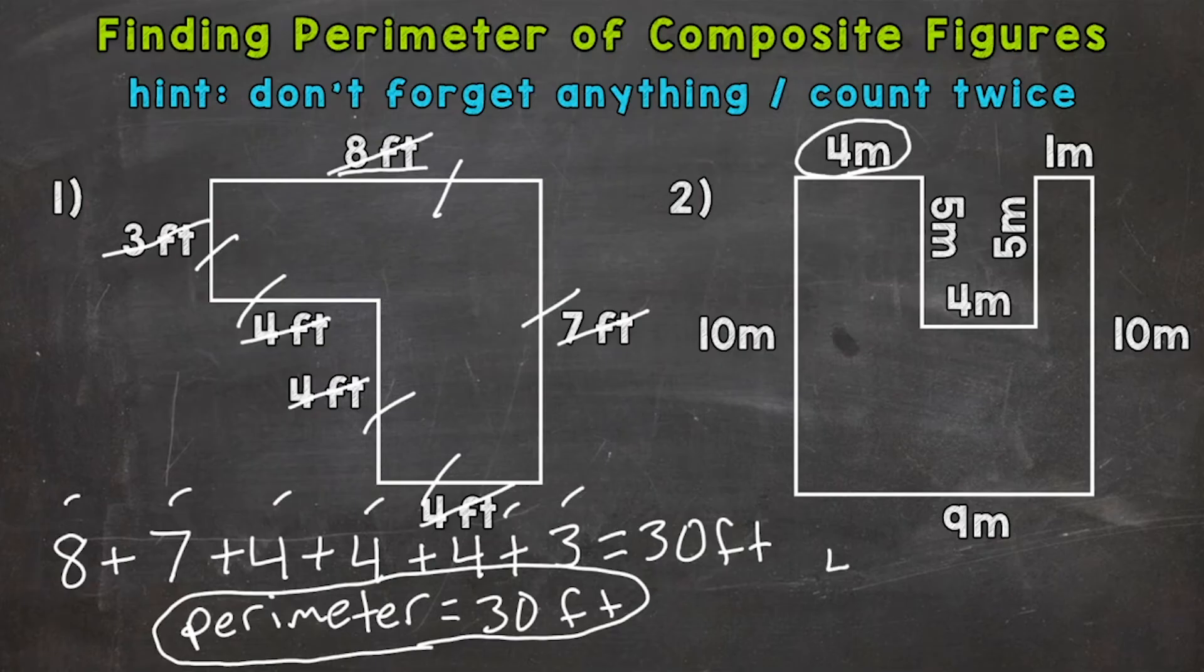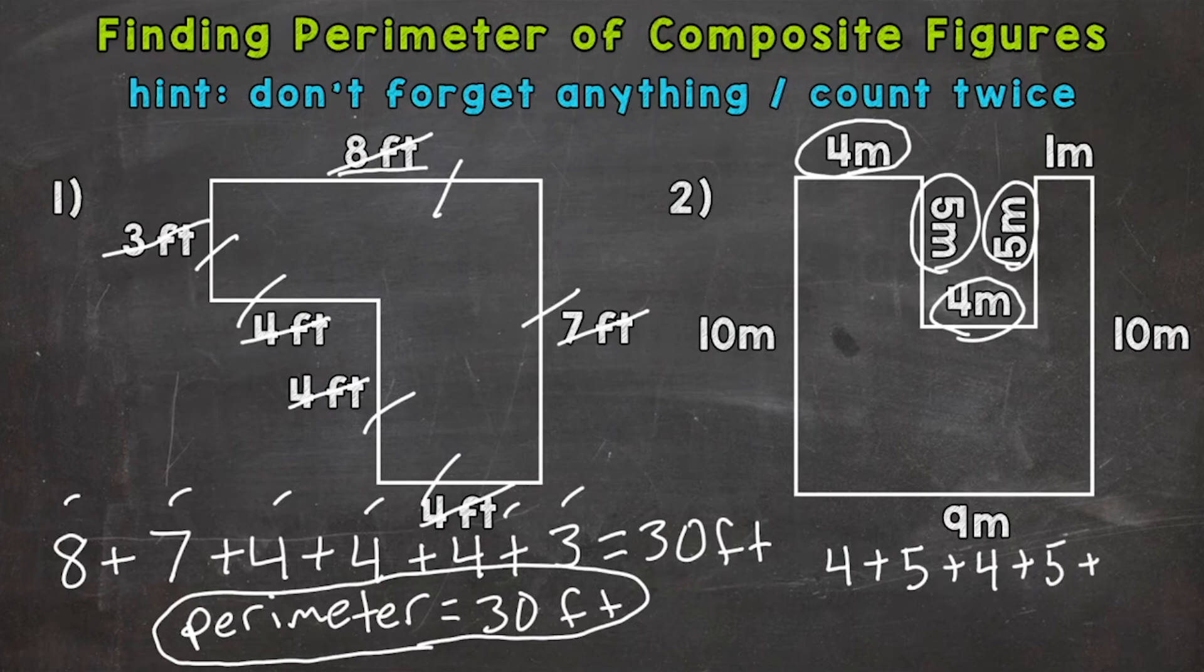Same idea here. Four plus five plus four plus five plus one plus ten. I'm running out of room, so I'll go to the next line: plus nine, plus ten.